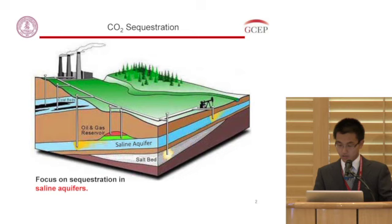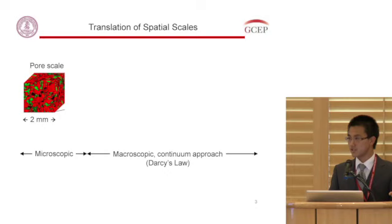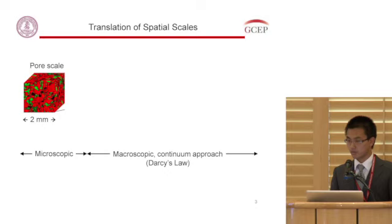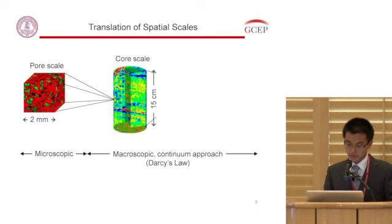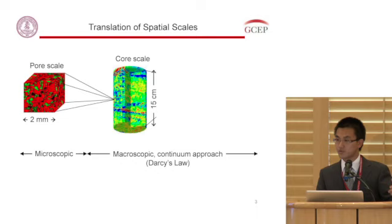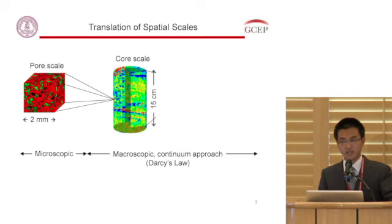To accurately predict CO2 migration in a saline aquifer, we need accurate simulations. The flow of CO2 and water occurs in the tiny pore spaces in the formation rock. However, it is intractable to model a large aquifer by tracing fluid migration in tiny pore spaces because there are numerous pores. Darcy's law, based on continuum assumption, was developed so that people can model flow in porous media at a larger scale, like the core scale. The core scale is very important because we can collect cores from drilling and perform high-resolution, accurate, and affordable measurements to reveal the physics.